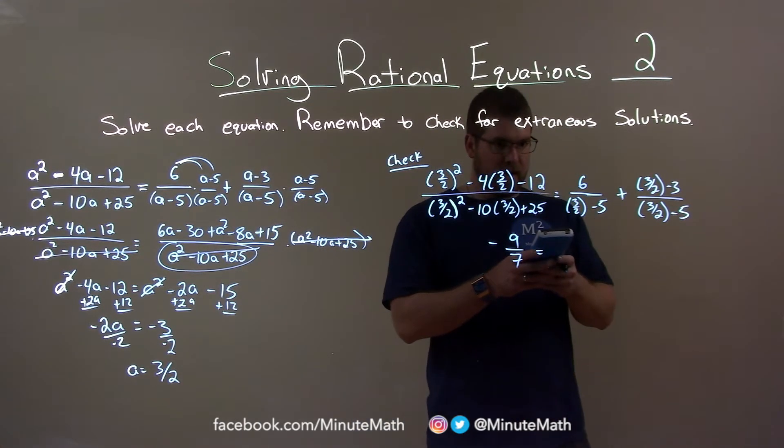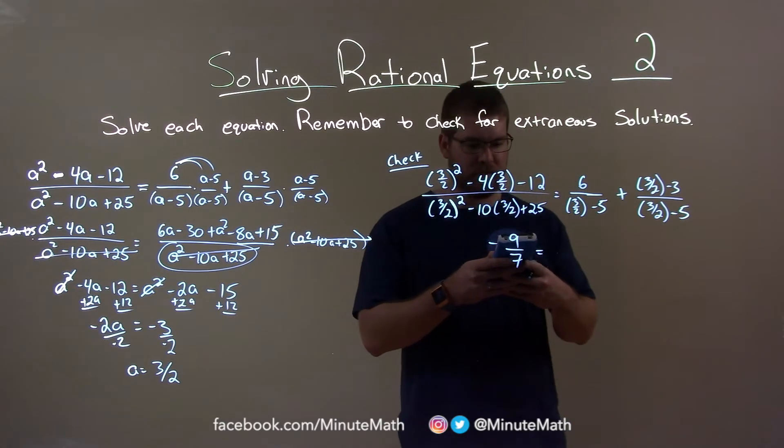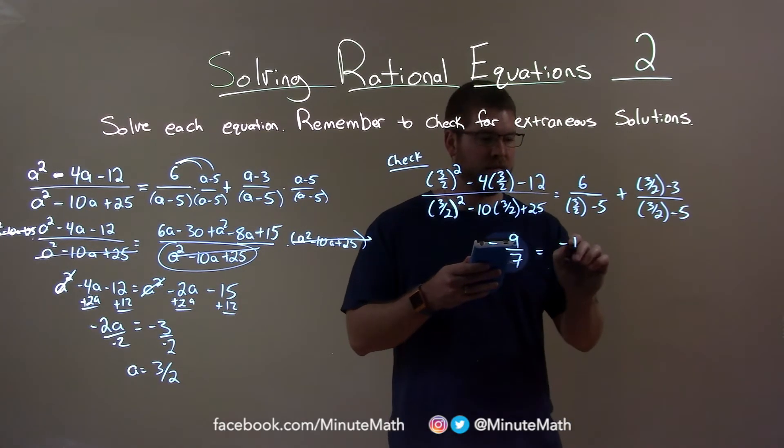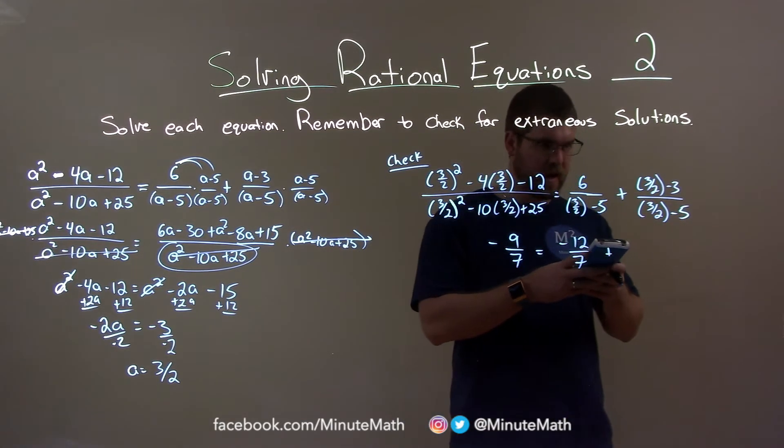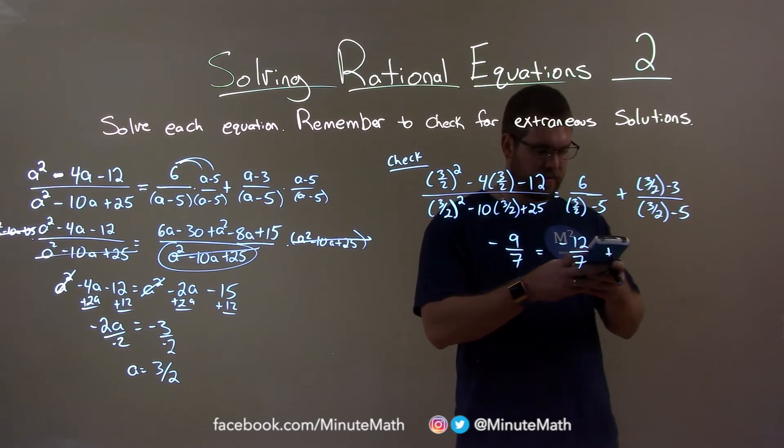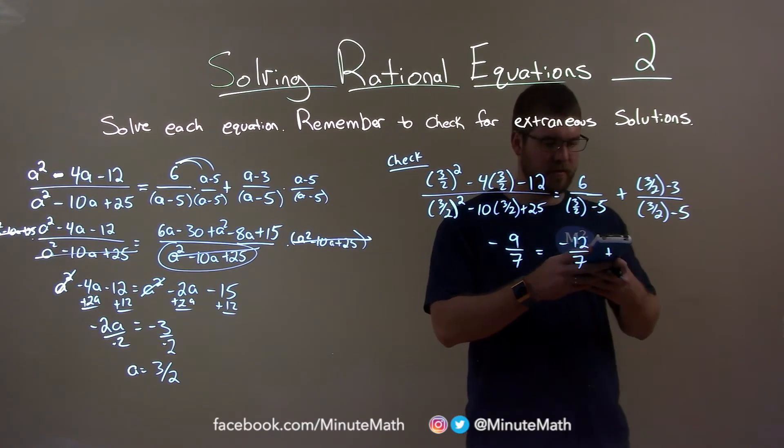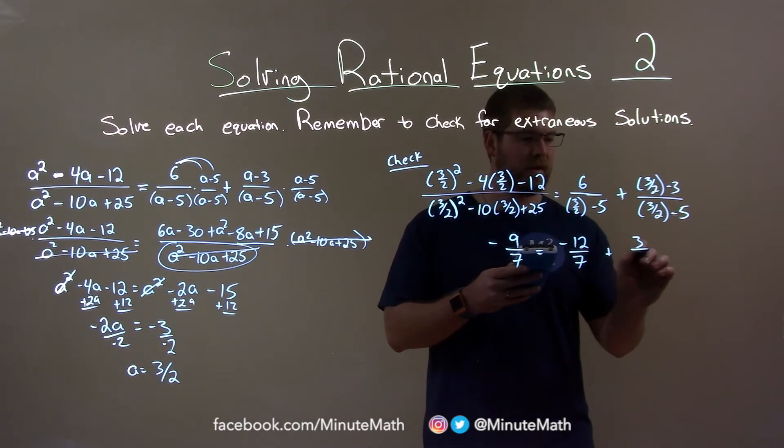6 divided by 3 halves minus 5, and this as a fraction is negative 12 sevenths. This one here, 3 halves minus 3 divided by 3 halves minus 5, and that as a fraction is 3 sevenths.